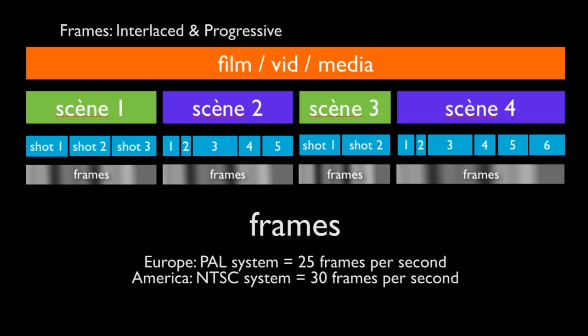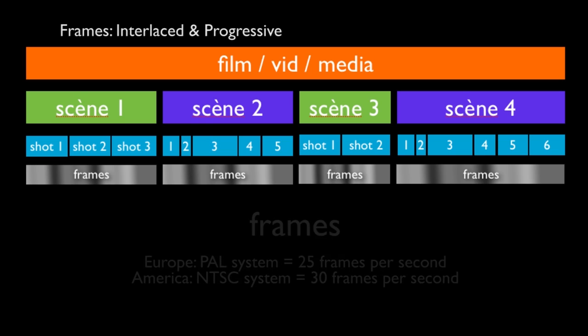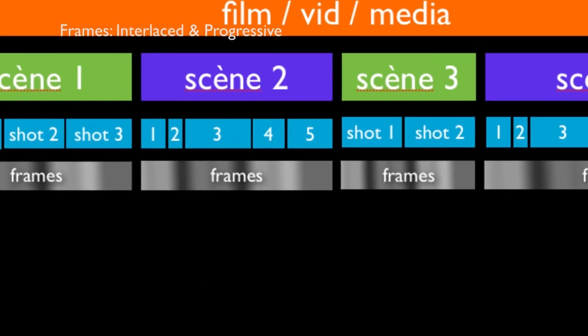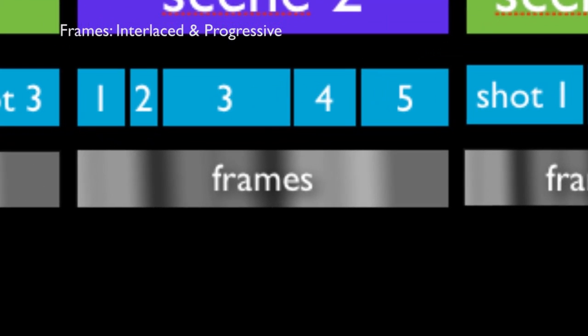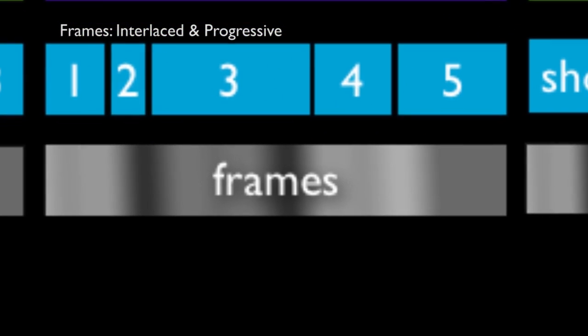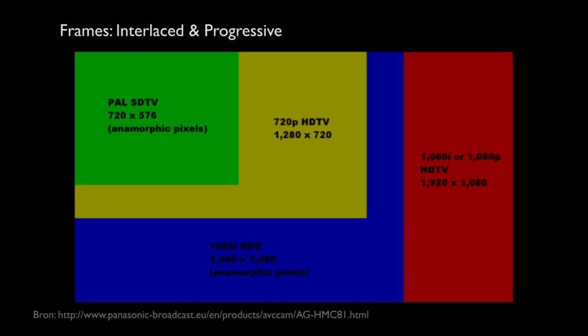In Europe we have the PAL system, which means 25 frames per second. In America they have the NTSC system, and that's 30 frames per second. Most films on YouTube are also 30 frames per second. So let's zoom into the frames and see what they are.